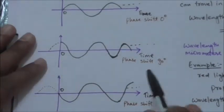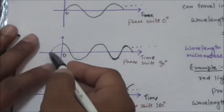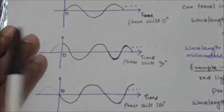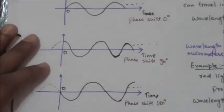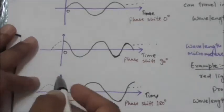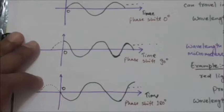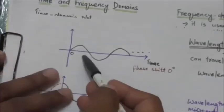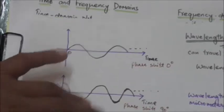A phase shift of 90 degrees corresponds to a shift of one quarter of the period. A phase shift of 180 degrees corresponds to a shift of one half of the period. A phase shift of 360 degrees corresponds to a shift of a complete period. A phase shift of 0 degrees means there is no shift, as you can see in the figure.